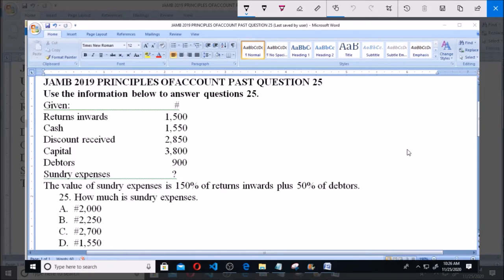The value of sundry expenses is 150% of returns inward plus 50% of debtors. The question is now: how much is sundry expenses?